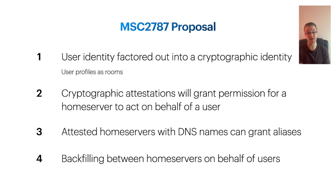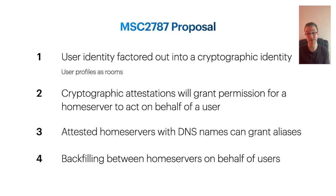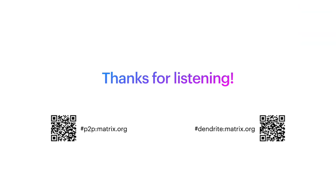Finally, we'll need home servers that a user belongs to to be able to backfill from each other and replicate the user's room memberships and history, so that the user can pick up any of their devices and see the same rooms with the same timelines. It's important that the user doesn't lose everything if they lose one device. Attesting multiple home servers or devices will not just serve for a consistent user experience across those devices, but it also serves as a form of backup. MSC 2787 as a proposal is still incomplete and there's still quite a lot to figure out, but this should be the final piece of the puzzle that would make P2P usable. We'll be continuing to post more updates on our P2P and Dendrite channels, so please feel free to join us on those on Matrix — and otherwise, thank you for listening.